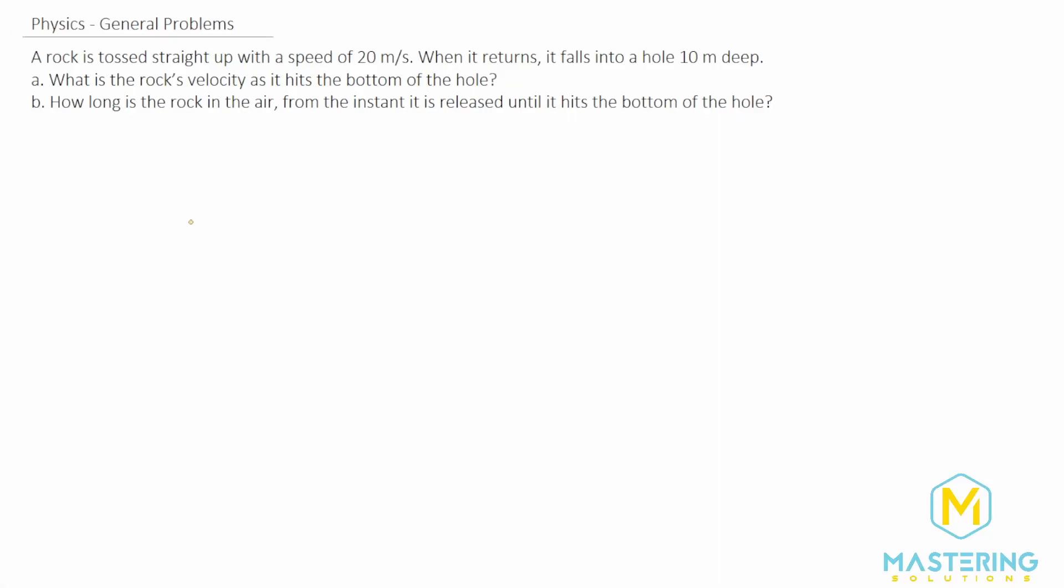Welcome to Mastering Solutions. In this general problem, they tell us that a rock is tossed straight up with a speed of 20 meters per second, and when it returns, it falls into a hole 10 meters deep. For part A, we need to figure out what the rock's velocity is as it hits the bottom of the hole.